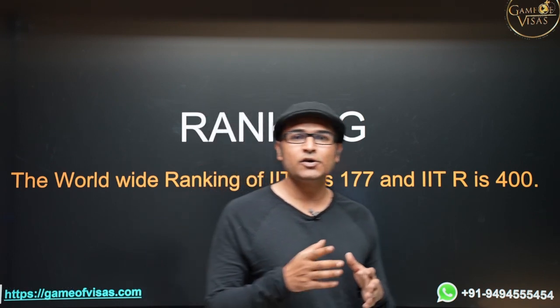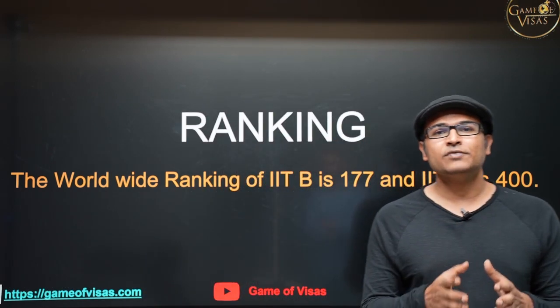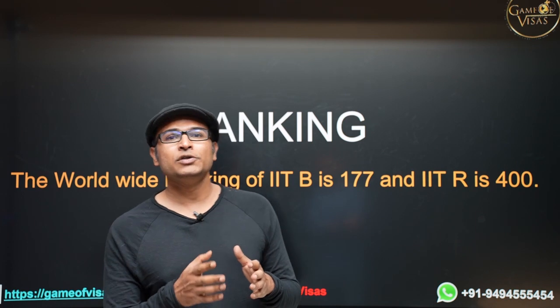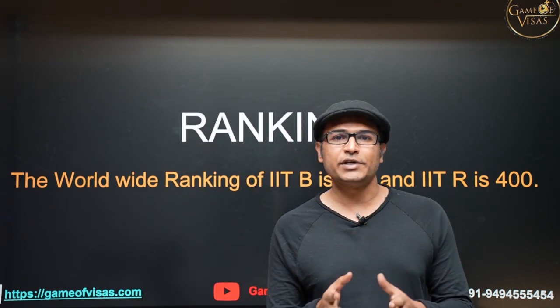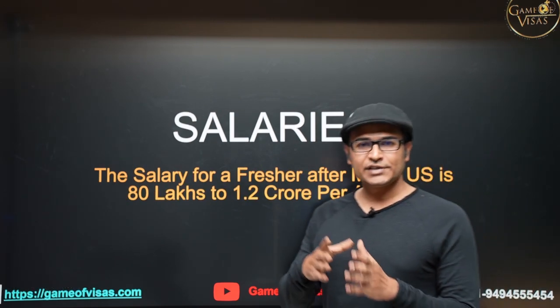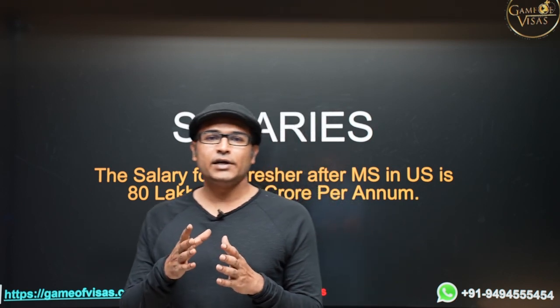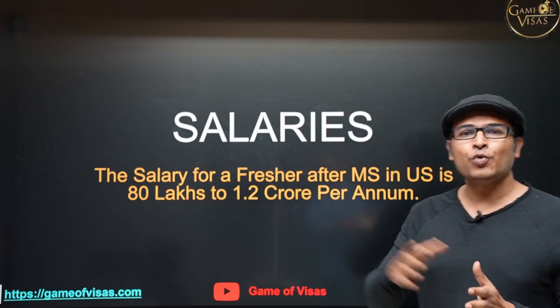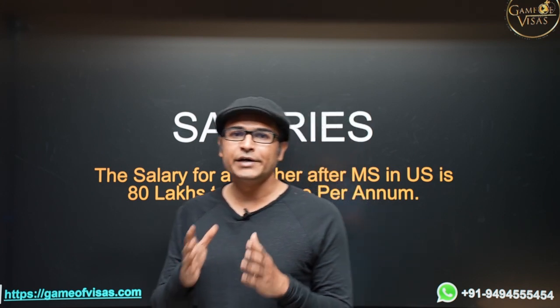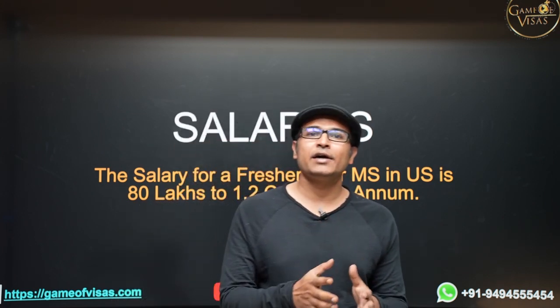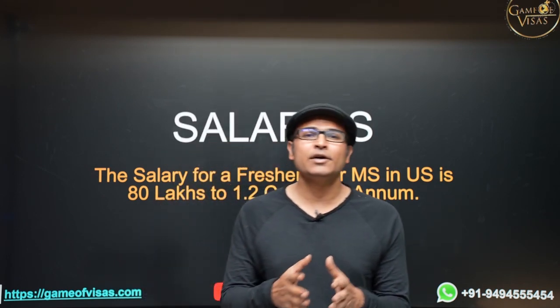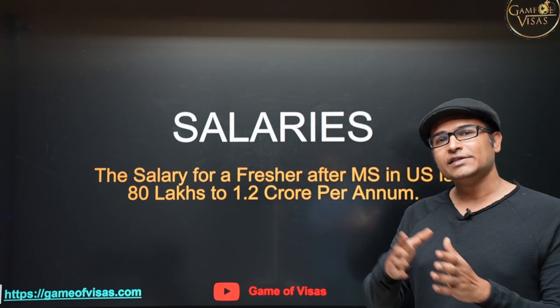And if you are working hard to get into IIT Bombay, IIT Bombay's ranking is 177 and IIT Roorkee's ranking is 400. If you are happy to get into IIT Roorkee, then getting into university better than IIT Roorkee is easier compared to getting into IIT Roorkee. And looking at the salaries for computer science, for software jobs, if you have done your masters in computer science in US, the salaries are ranging from 80 lakhs per year to 1.2 crore per year. So even if you take an average of 1 crore per year, your savings will be much higher than the salaries in India. After taxes and your cost of living, you can easily save 40 to 50 lakhs per year. And in India, the maximum jobs that you get is around 30 lakhs. So your savings will be much greater than the salaries in India.